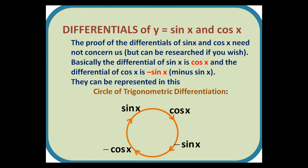Differentials of y equals sin x and cos x. The proof of the differentials of sin x and cos x need not concern us at this stage. Basically, the differential of sin x is cos x, and the differential of cos x is minus sin x. They can be represented in this circle of trigonometric differentiation. So sin gives you cos, cos gives you minus sin, minus sin goes to minus cos, and minus cos goes back to sin.